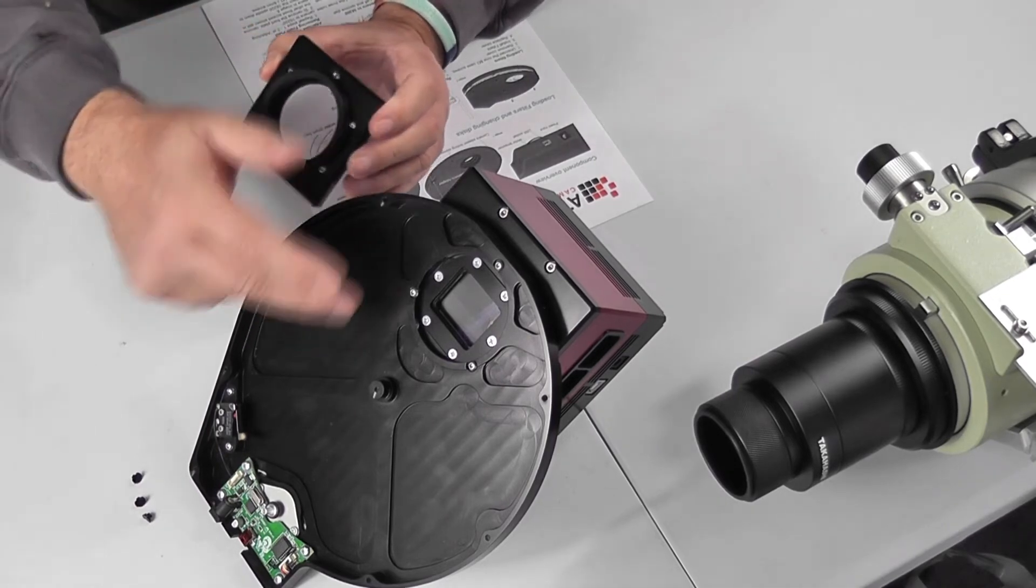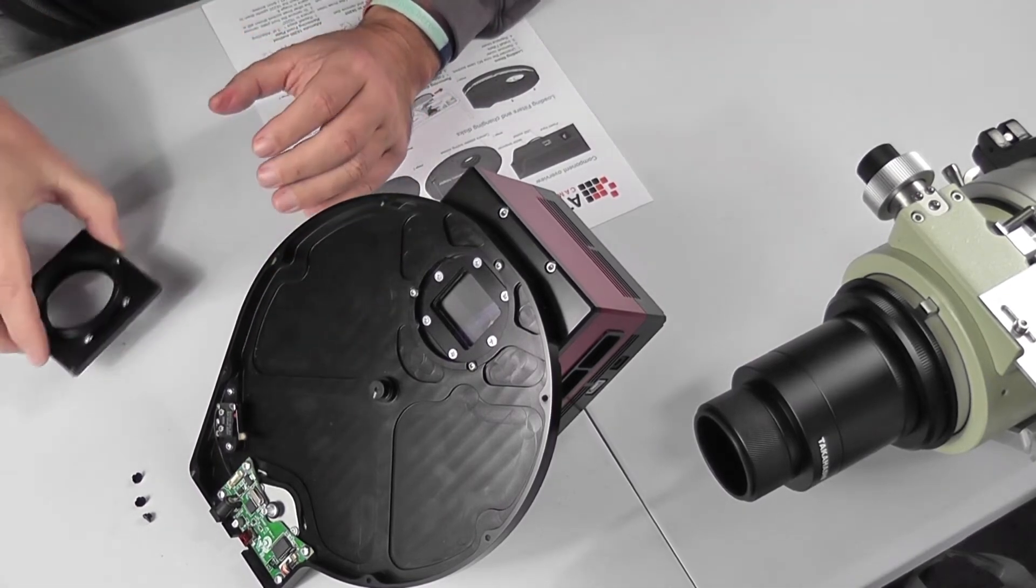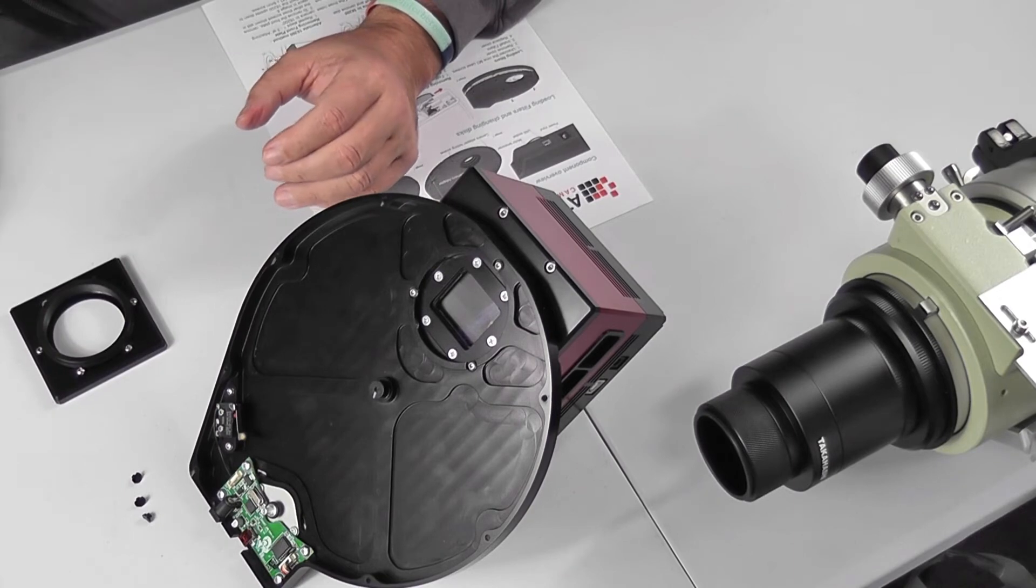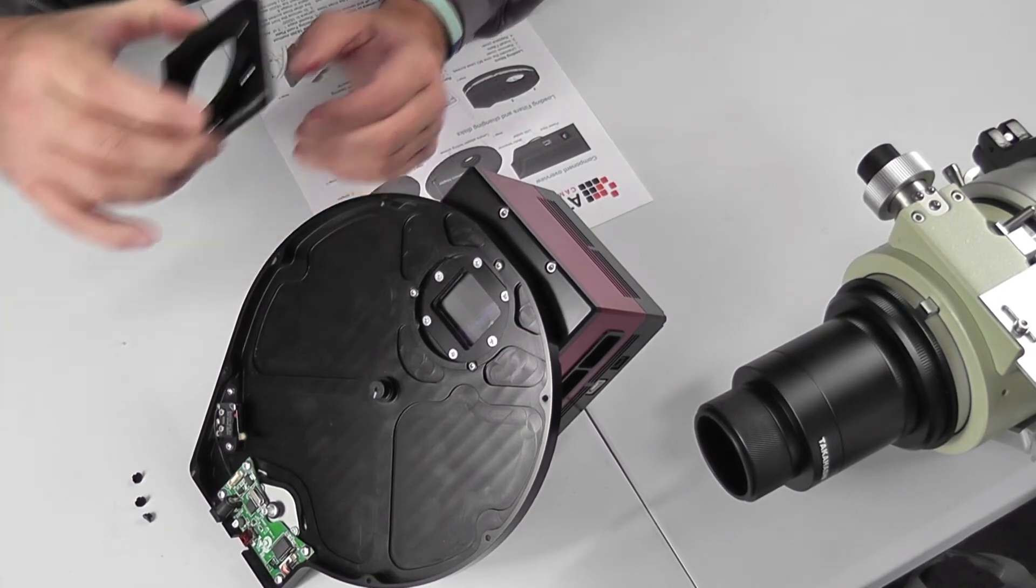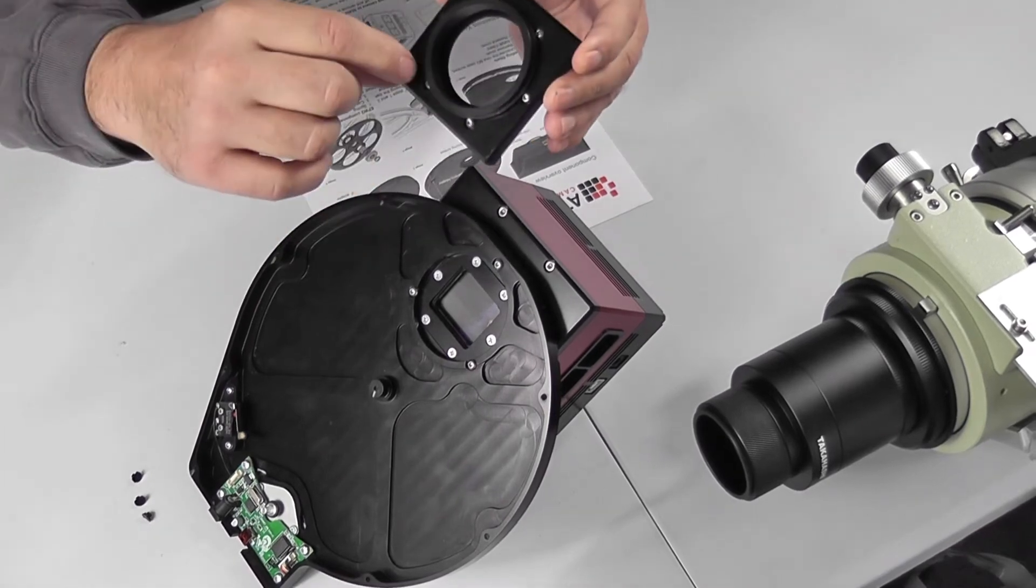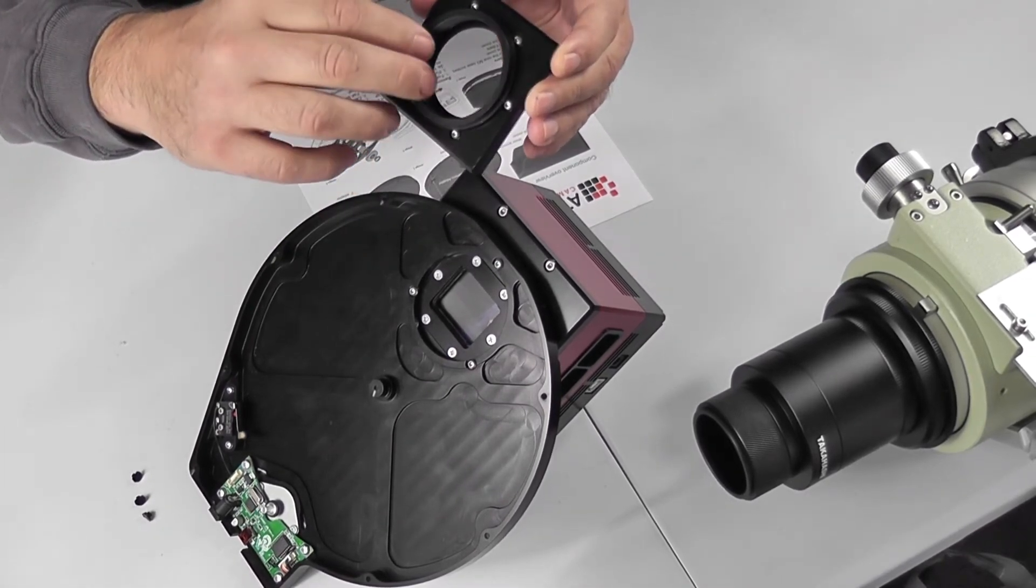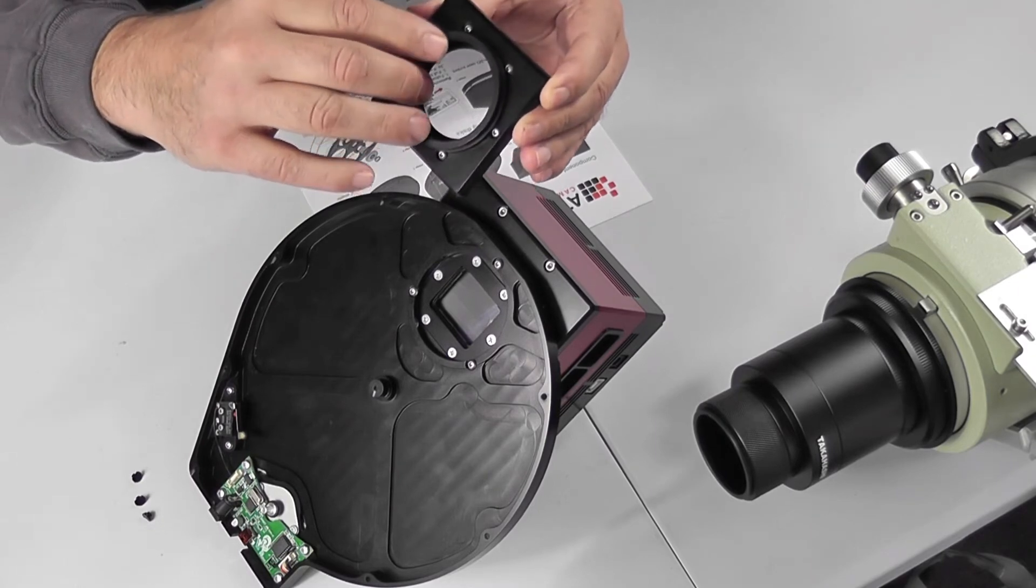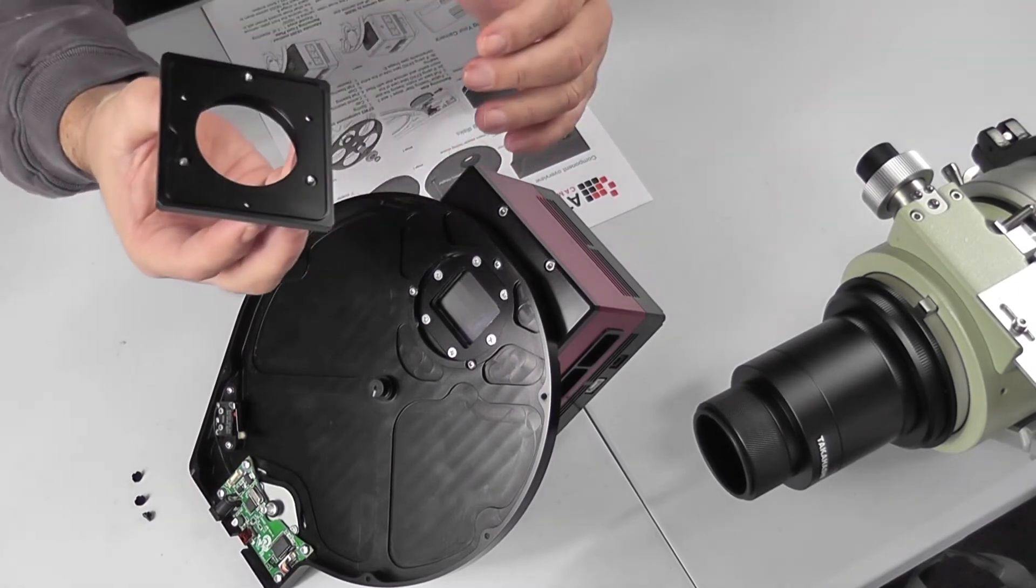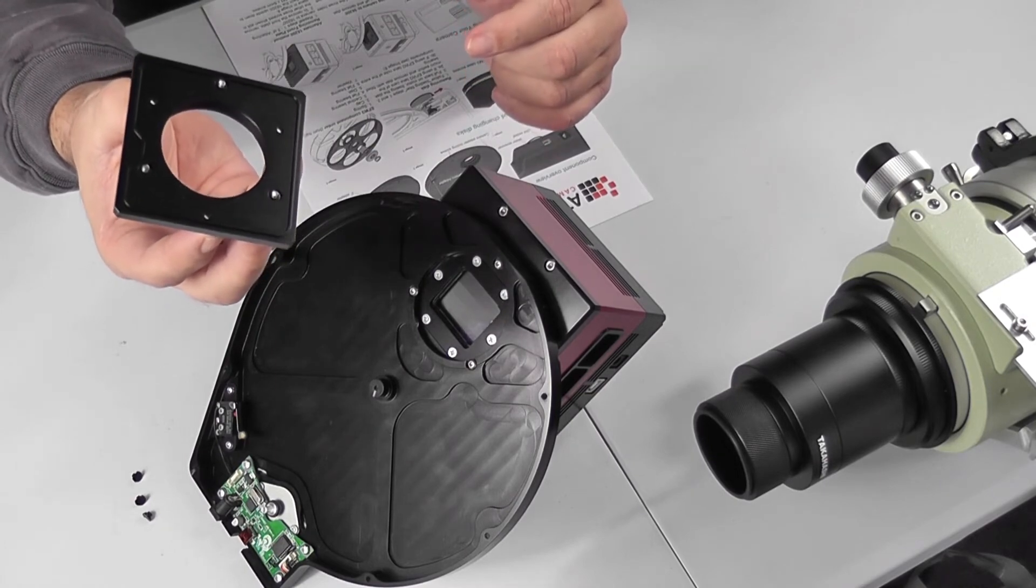Now, thing to consider when you're fixing the filter wheel directly to the camera is the length of the screws. Attic refer to, if you're fixing it with this plate attached, using the M3 8mm long screws supplied.